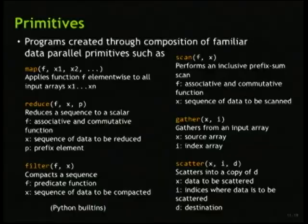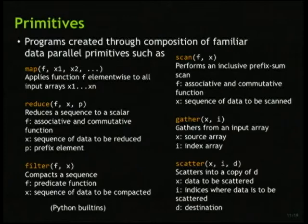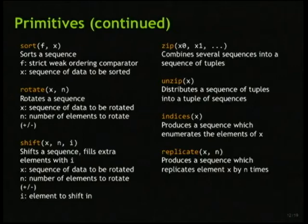A little bit more about the kinds of primitives that we support. We borrow map, reduce, and filter directly from Python, and they do the same thing you would expect. We also have some other data parallel primitives that we define, such as scan, which does an inclusive prefix sum; gather, which pulls with indirection from input arrays; scatter, which does the reverse; sort, rotate, shift; and then things like zip and unzip. Zip is similar to the Python zip, where you take several sequences and combine them into a sequence of tuples. Unzip does the inverse. We also have things like indices, replicate, and so forth.